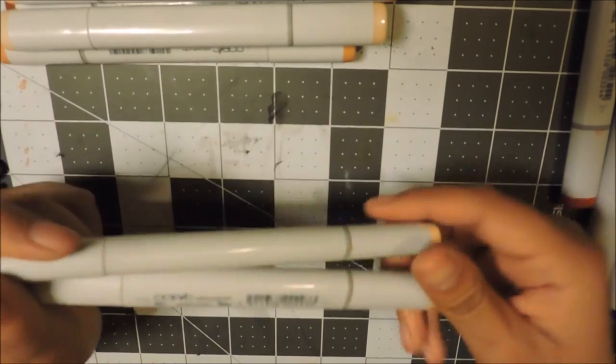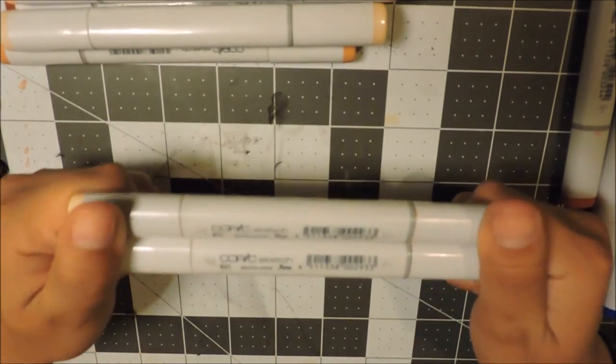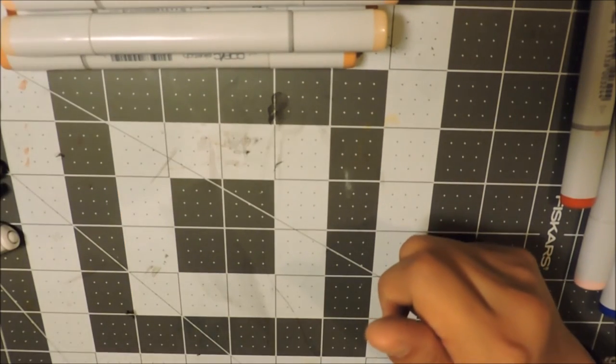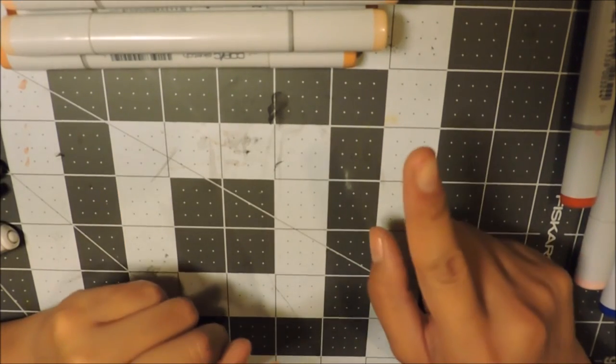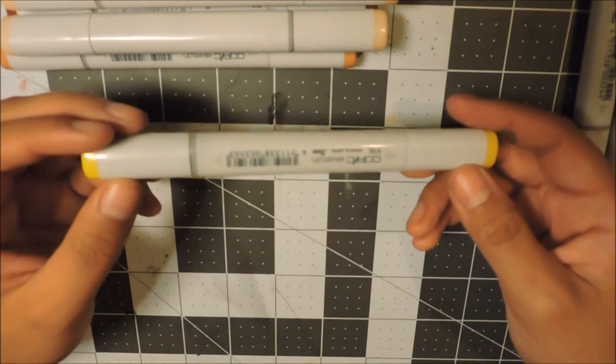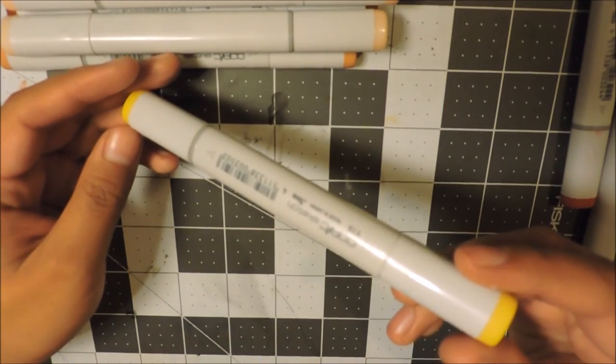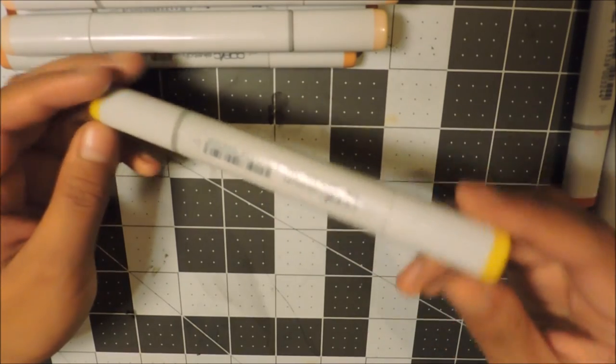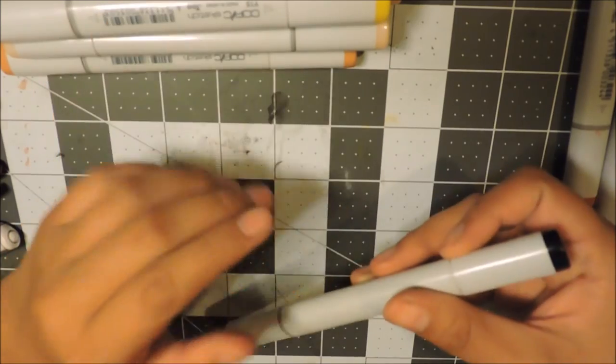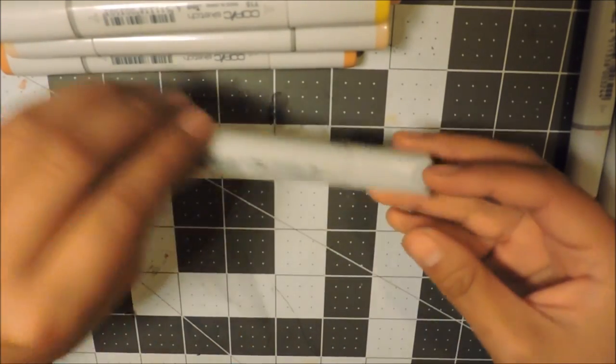You do not need to buy two of these. The Copic markers are refillable. The Windsor & Newton and Spectrum are not refillable. Those you will have to replace. Here I have Y15 Cadmium Yellow which is I believe the only yellow I have for the Sketch. I have 100 black.